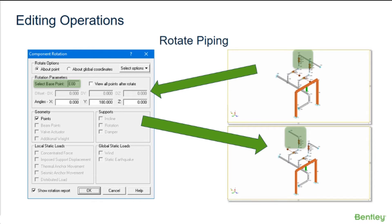If the selected base point upon opening the component rotation dialog box isn't the desired point, you can manually enter a different point in the base point field. Alternatively, the model selection can be rotated about an arbitrary point in space, offset from the origin.